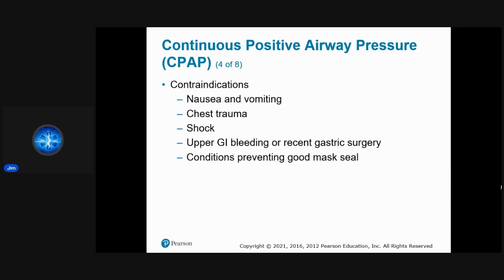Additional contraindications include shock — since CPAP lowers blood pressure by affecting heart filling. Upper GI bleeding or recent gastric surgery is contraindicated due to pressure being forced into the abdomen. Anything preventing a good mask seal, such as a thick beard or facial trauma, also contraindicates CPAP use.